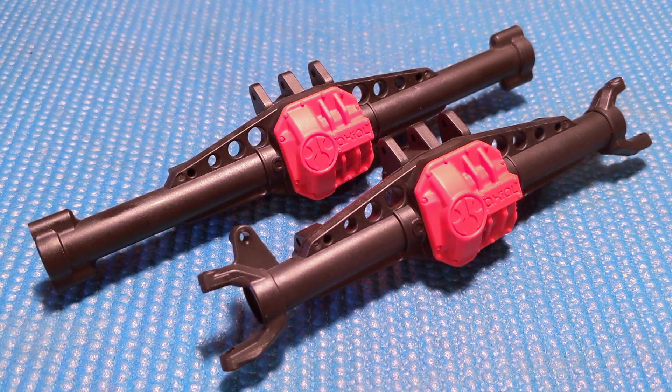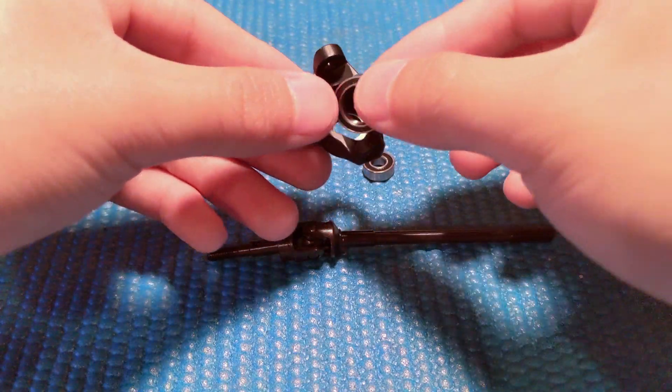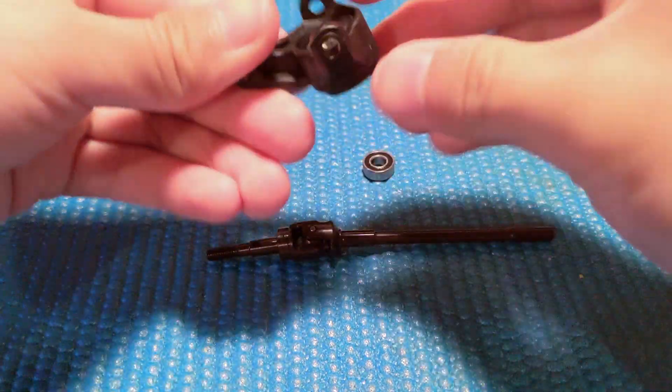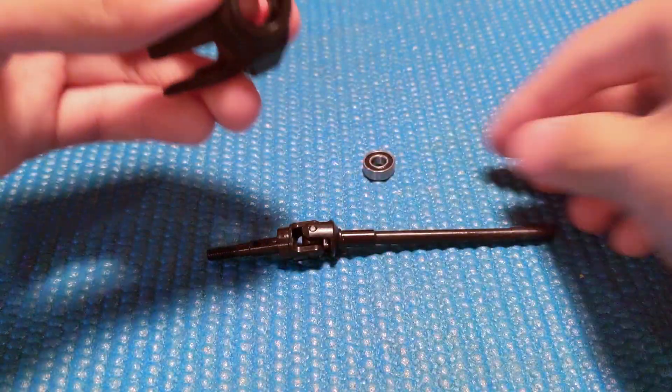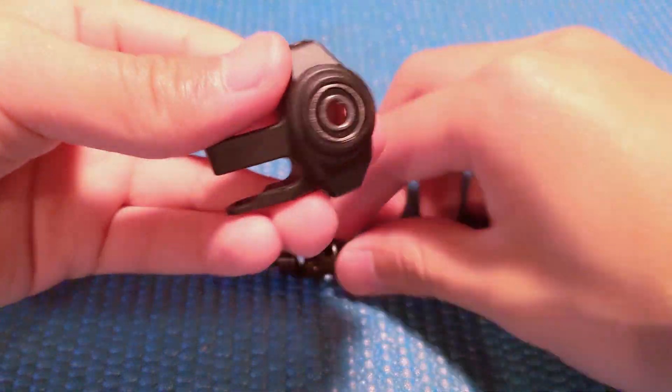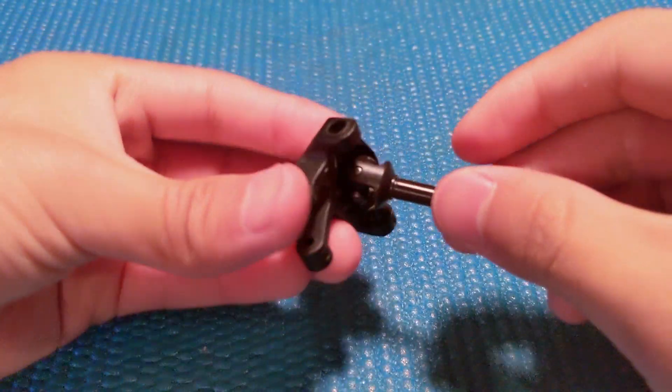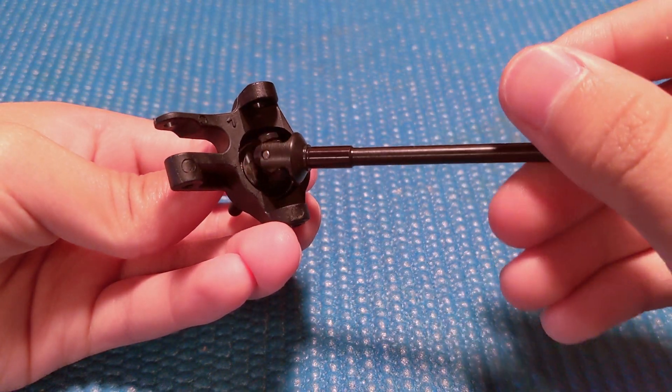Step 3: install bearings on both sides of the steering knuckles for the front and rear axle. To assemble the front steering knuckles, first slide the bearings on both sides, followed by the axles. Be sure to do both the left and right side.